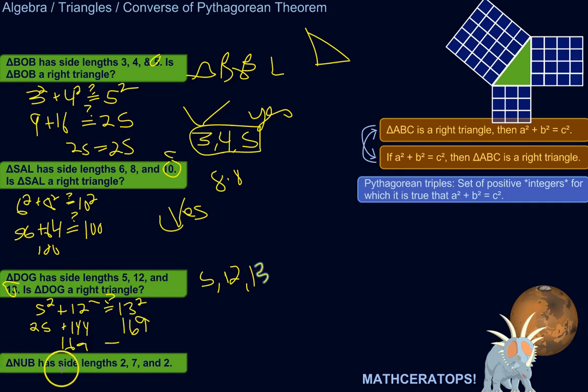Alright, triangle NUB has side lengths 2, 7, and 2. Okay, so the longest side would be 7. So call the other 2s A and B. 2 squared plus 2 squared equals, and then we're calling that C, 7 squared. Is that true? 2 squared is 4, this would be 4, plus 4, equals question mark 7 squared is 49. 4 plus 4 is 8. Is 8 equal to 49? No. Not a right triangle.